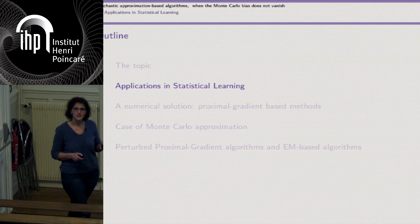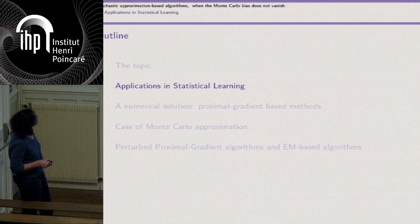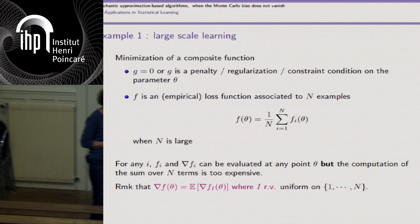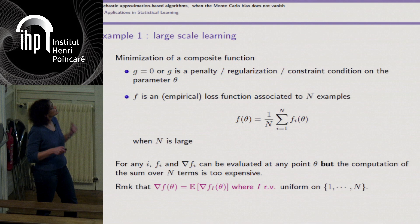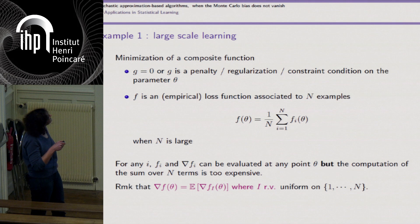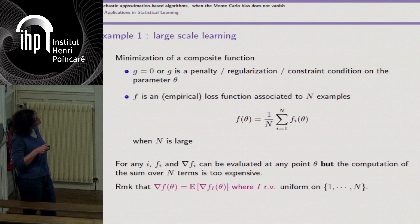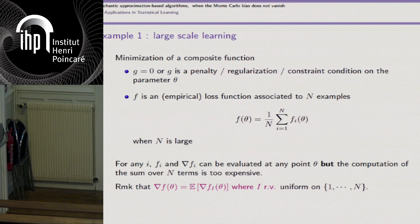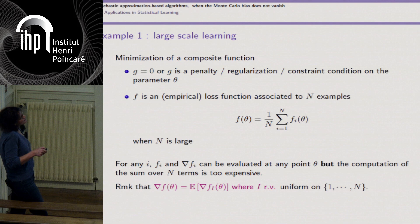I am interested in designing such optimization algorithms because I have statistical learning problems in mind. The first example is large-scale learning, where G can be zero or introduced as a penalty, regularization term, constraint term, or log-prior depending on the community. The function F is given by a sum over a very large number of examples of a loss function, which can be seen as a minus data-fidelity term.